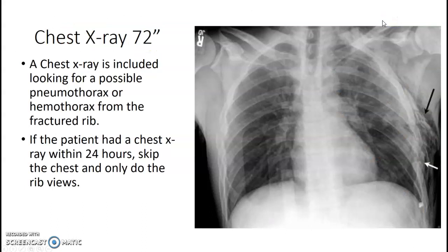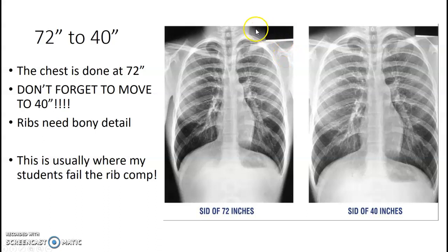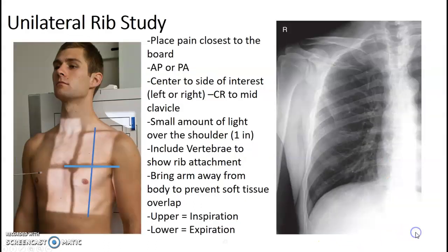Why do we do a chest x-ray at 72 inches first? We're looking for possible pneumothorax or hemothorax from the fractured rib. If the patient has had a chest x-ray within 24 hours, you can skip the chest and only do the rib views. After the chest x-ray at 72 inches, move to 40 inches before you do anything else. This is usually where students bomb their rib competency — they forget to move to 40. Do it first. Ribs are bony detail; you need that SID of 40 inches. You can see on this image the magnification factor from 70 to 40, and also the detail change.